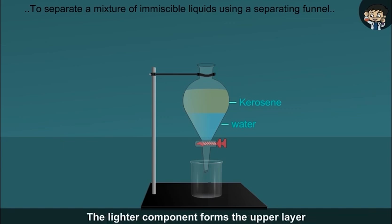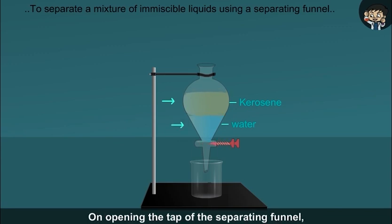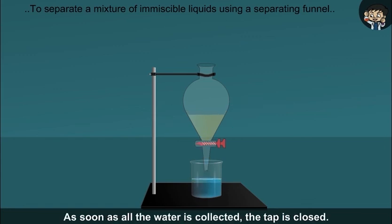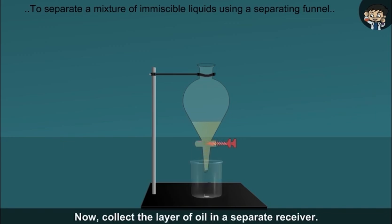The lighter component forms the upper layer and the heavier component forms the lower layer. On opening the tap of the separating funnel, the heavier component, i.e. water, can be collected in a receiver. As soon as all the water is collected, the tap is closed. Now collect the layer of oil in a separate receiver.